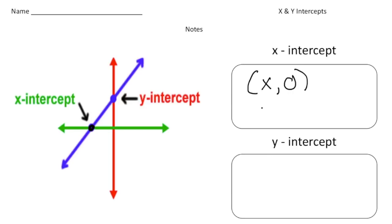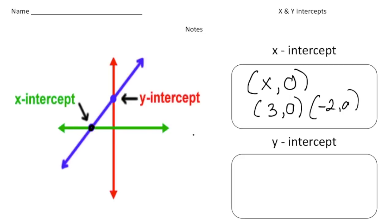An example of an x-intercept could be x is three and y is zero. Or you could have one like negative two, so call it negative two and zero. Remember, the x-intercept touches the x-axis — let's put a little x here. And then the y-intercept is the point of the graph that touches the y-axis, so let's put a little y here. Let's circle that point.